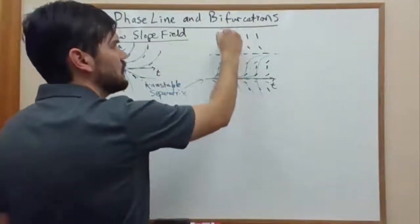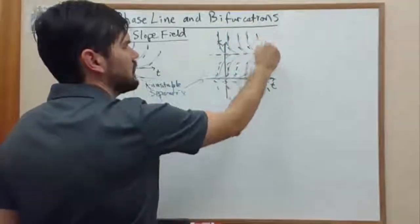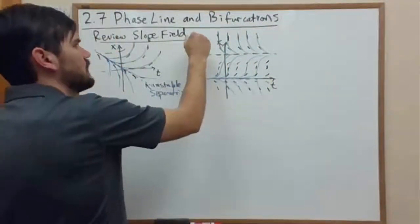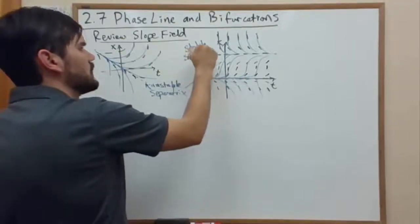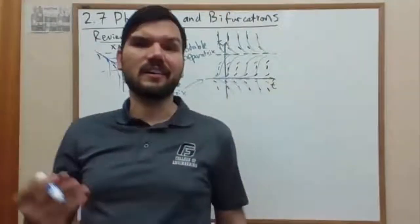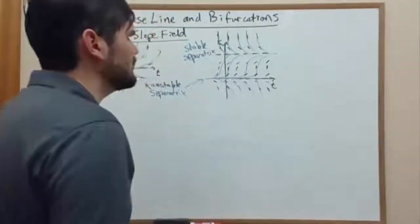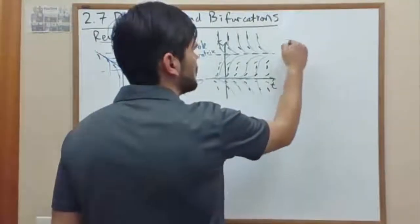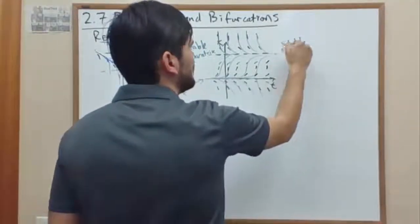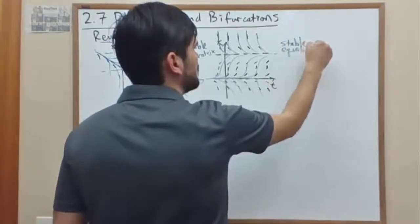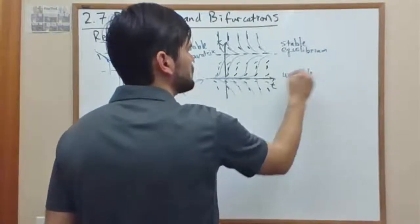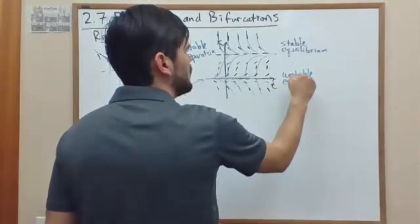However, on top we have a stable separatrix. Now, when the separatrices are constant values, we call them equilibrium. So we call this a stable equilibrium. And this is an unstable equilibrium.